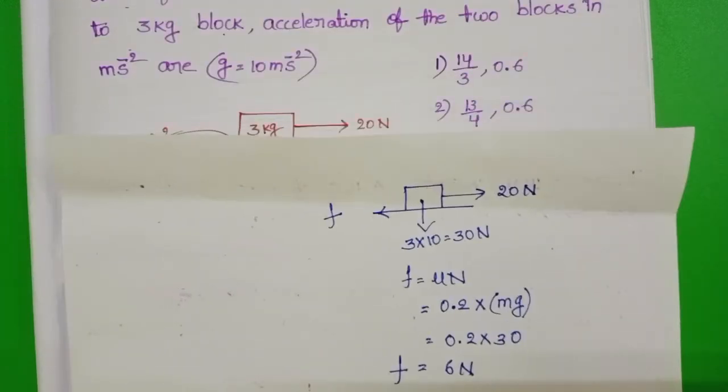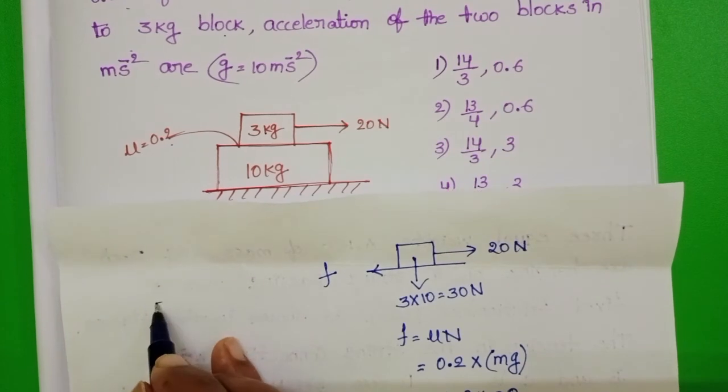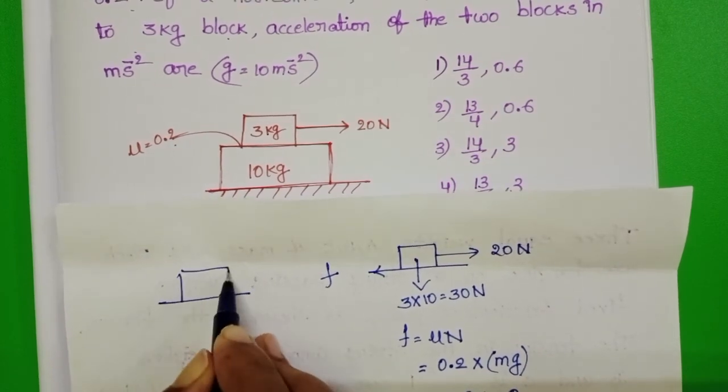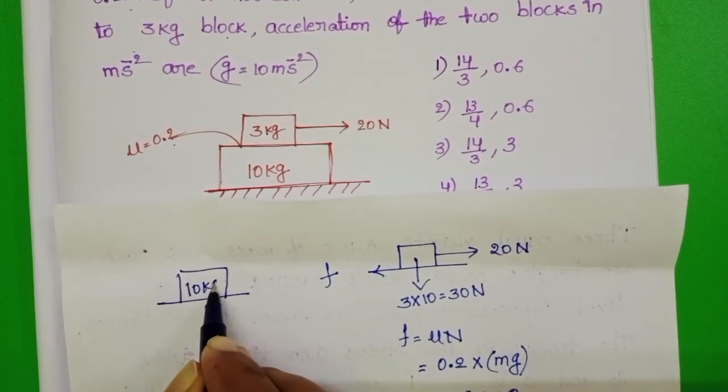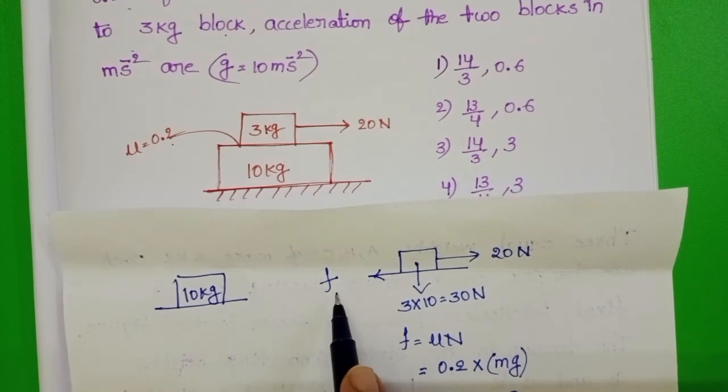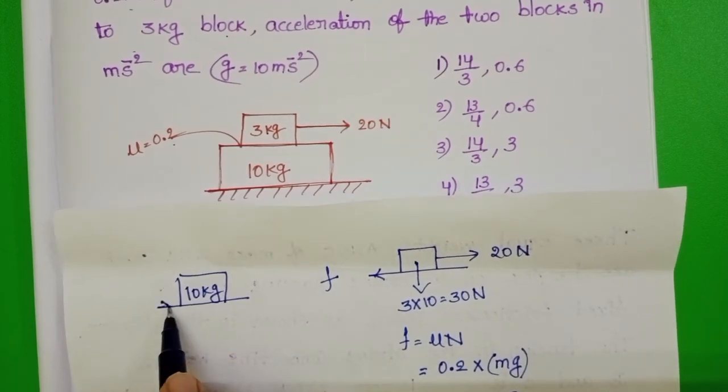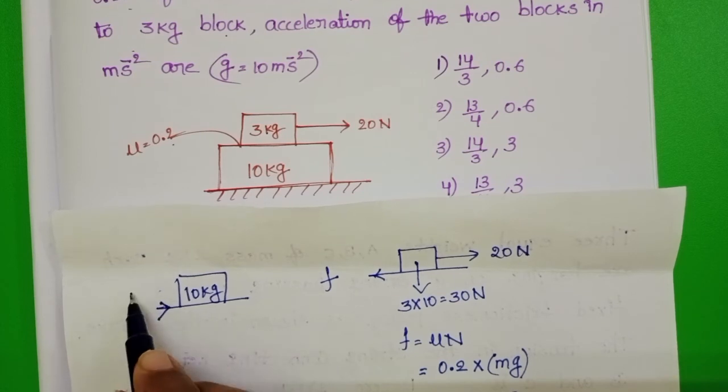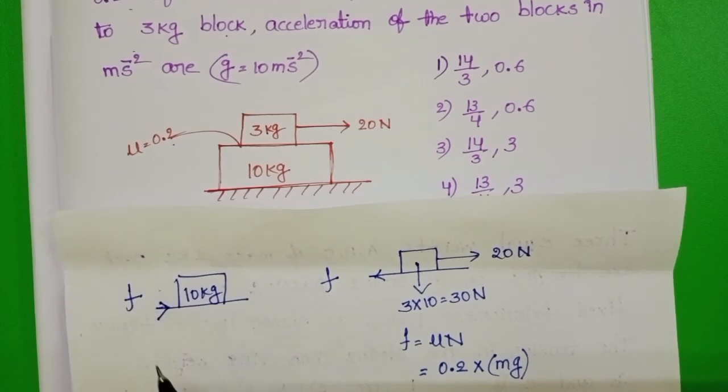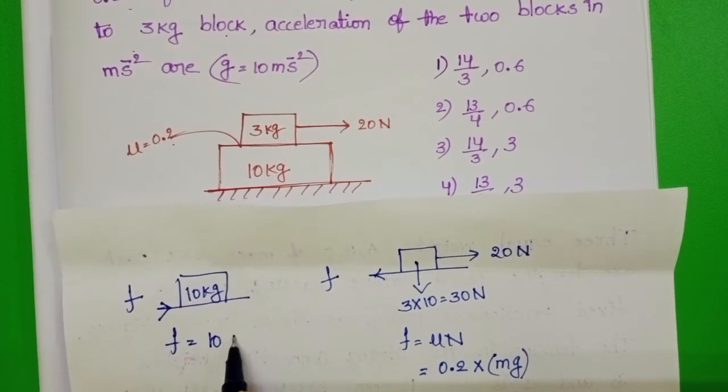And now, draw the free body diagram of 10 kg block. Due to this frictional force, it exerts a pseudo force on 10 kg block. F equals 10A.